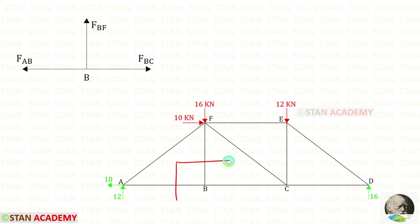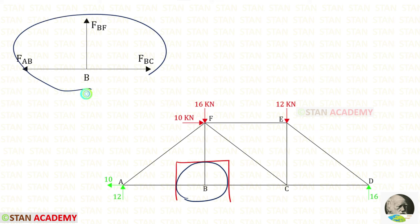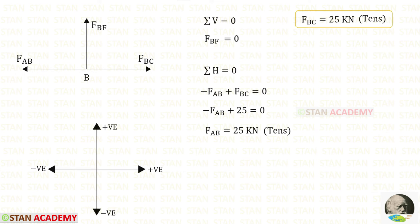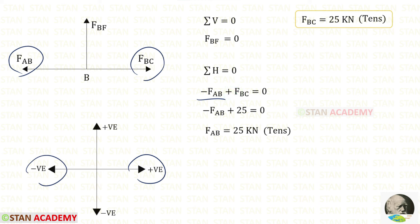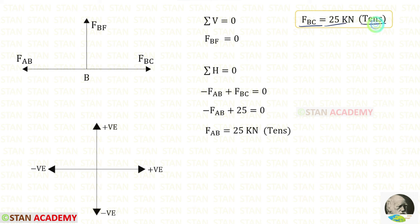Now I am going to make the fourth section and take only this part for analysis. We apply sigma V equals zero to find FBF. Vertically there is only one force — FBF — so FBF equals zero. Now let us apply sigma H equals zero: FAB is acting towards the left side — negative — and FBC is acting towards the right side — positive. We have already found FBC as 25 and tensile. Applying that, for FAB we get 25 kN, which is tensile.